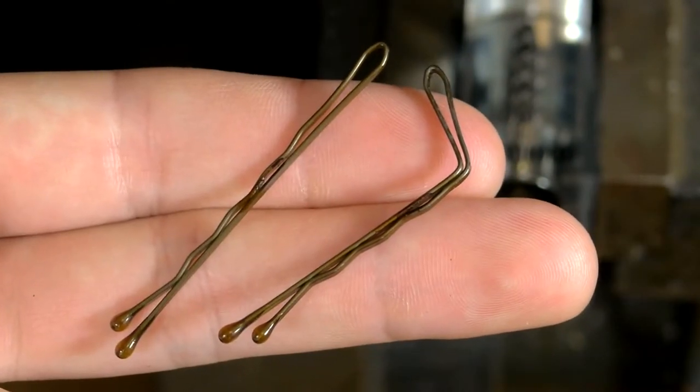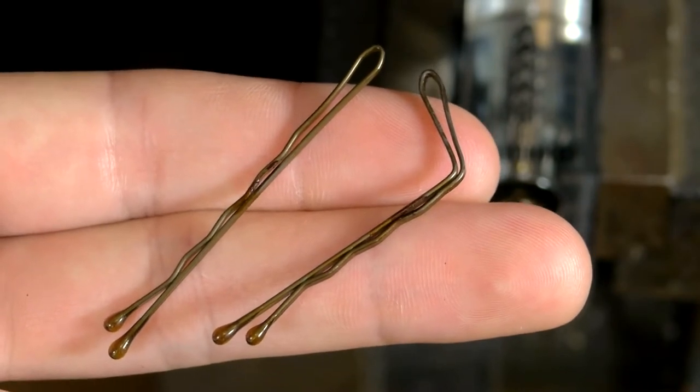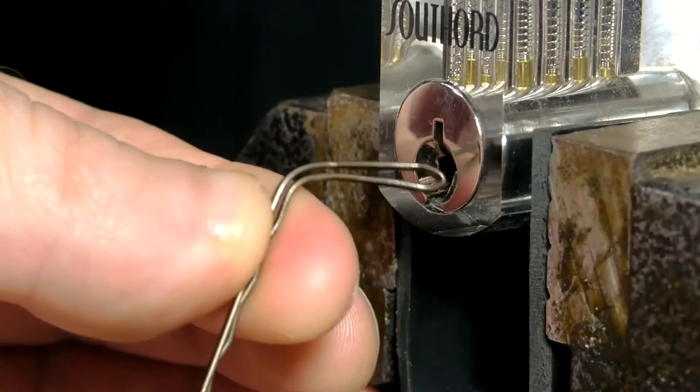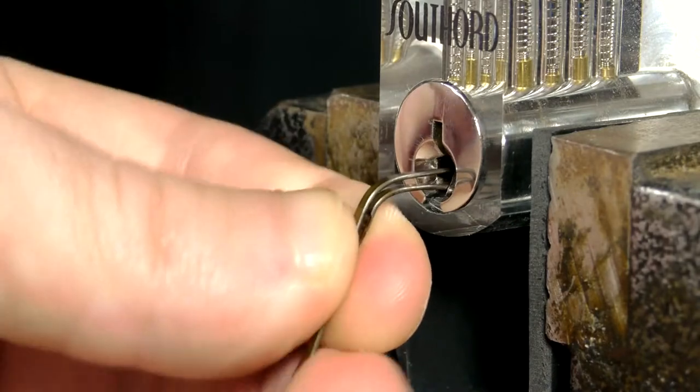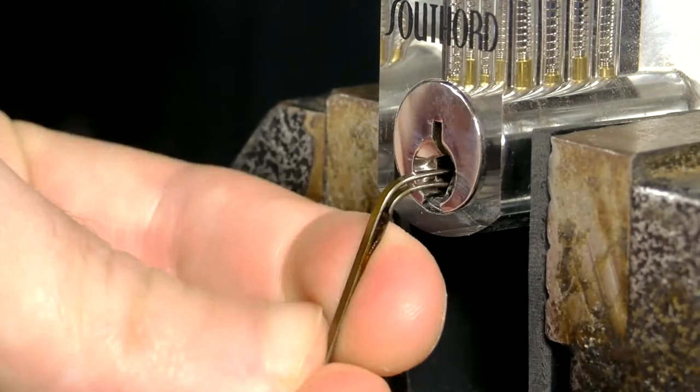Now making the lever that will turn the lock is extremely simple, and just involves bending a pin as shown so it can be inserted into the keyhole, causing pressure on the arm to translate into rotational force on the lock.